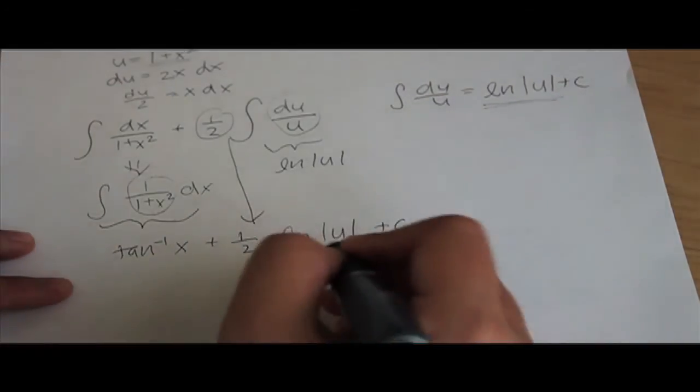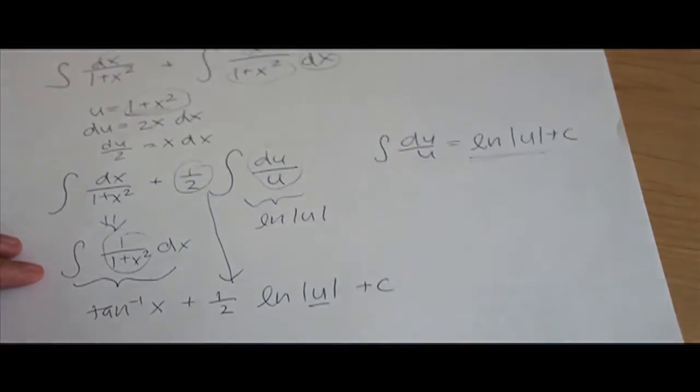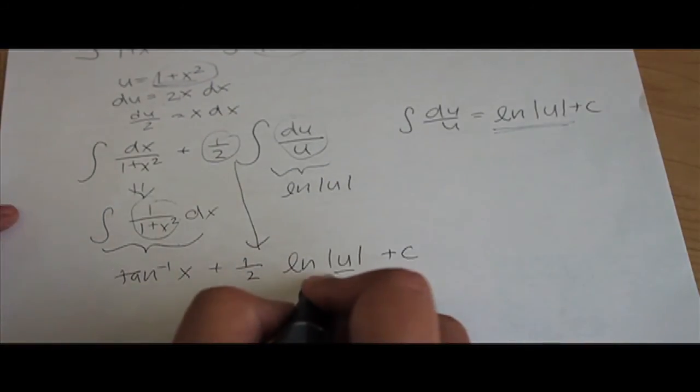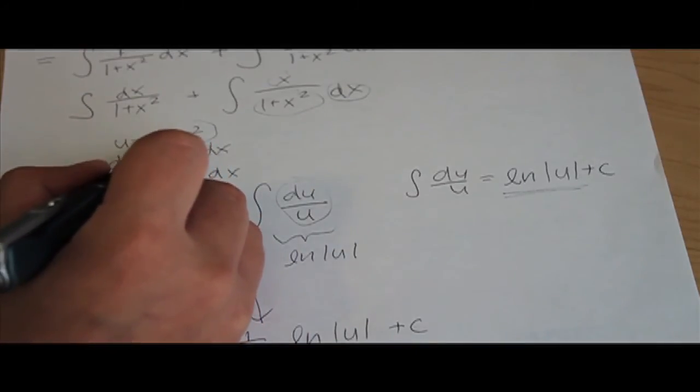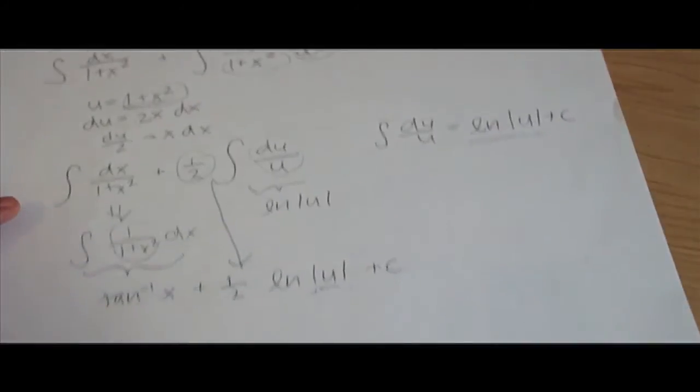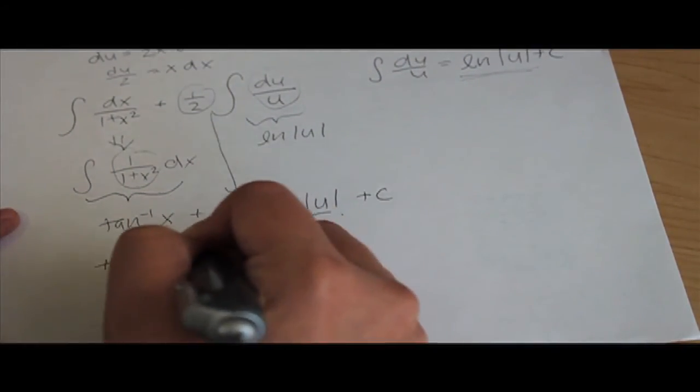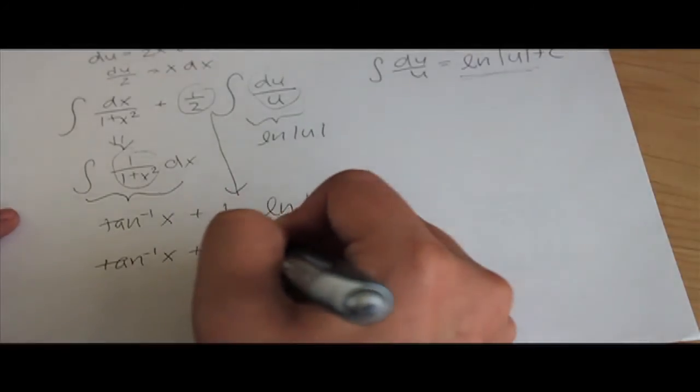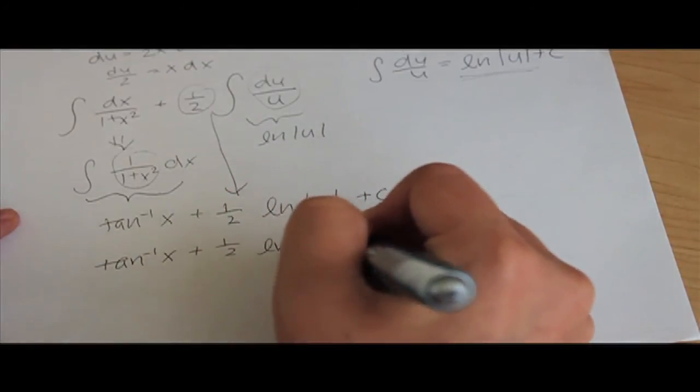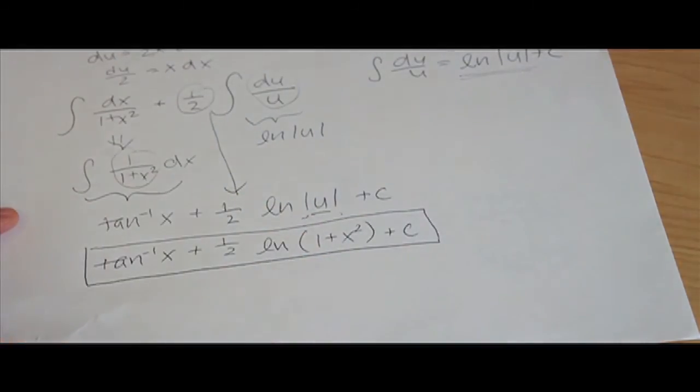Okay, so now we just have to fill in our u, and from before our u is 1 plus x squared. Now we can drop these absolute values because no matter what number or value we plug into x squared, whether it's negative or positive, it's always going to be positive. So we don't really need these absolute value bars to make it positive. So our final answer is going to be arctangent x plus one half natural log of 1 plus x squared plus c. That's going to be your final answer.